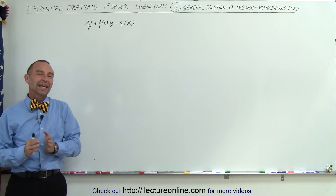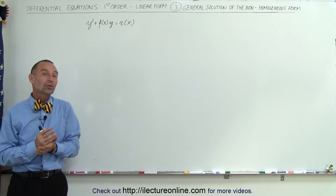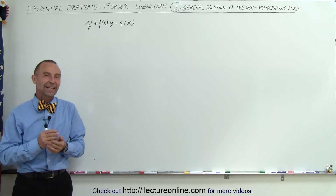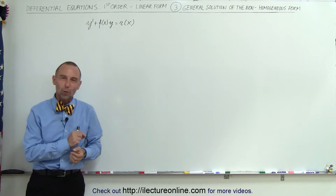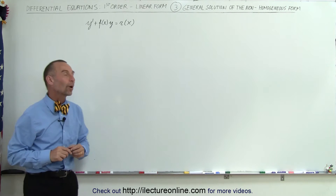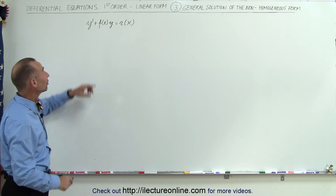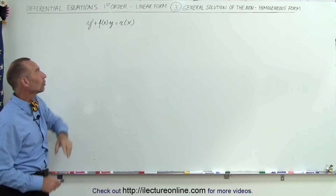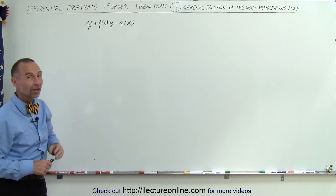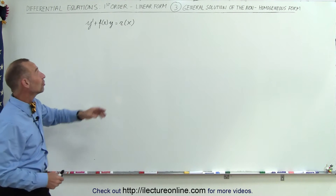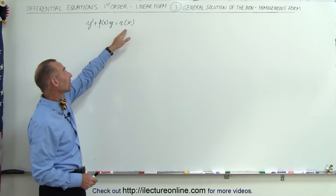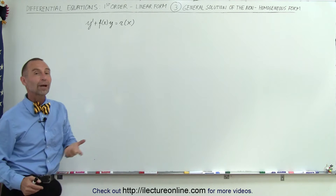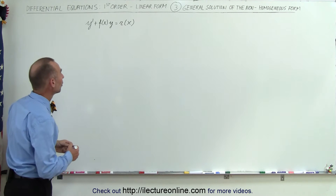Welcome to that lecture online. In this video, we're going to solve the non-homogeneous linear first-order differential equation. It is in the form y' plus f of x times y equals r of x. Non-homogeneous means that on the right side of the equation, we don't have a zero — we have some function of x.